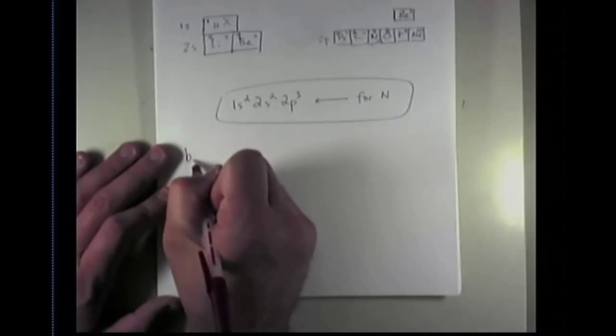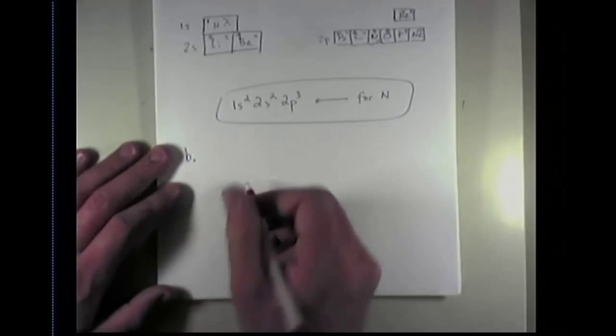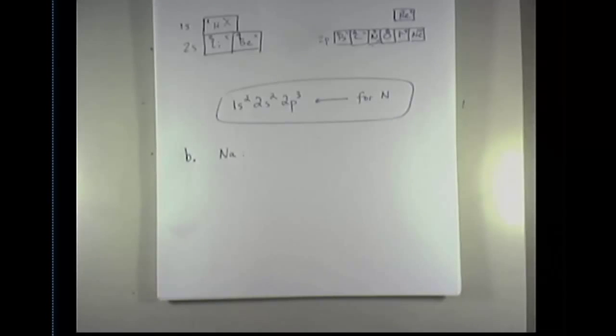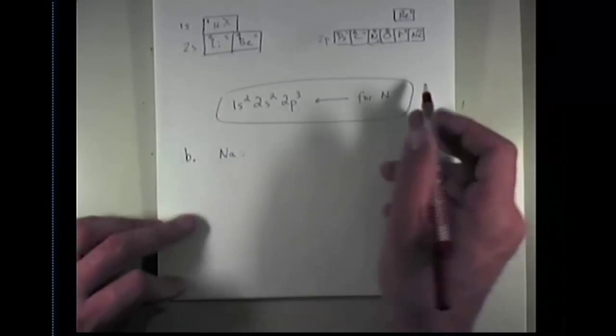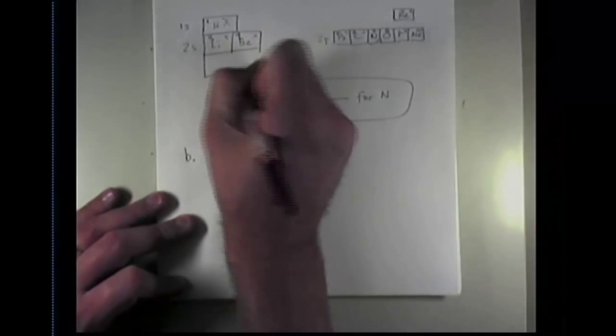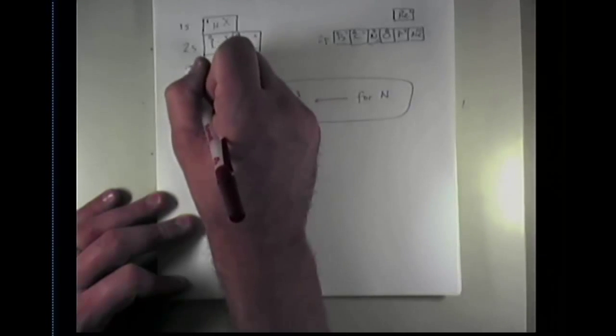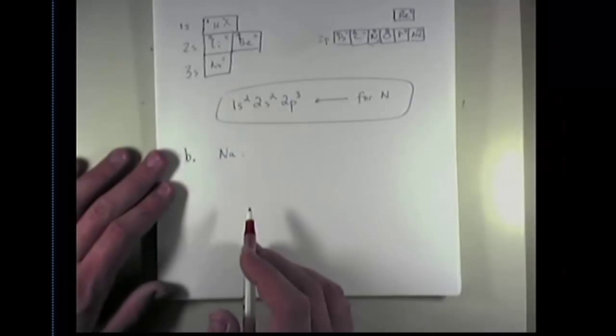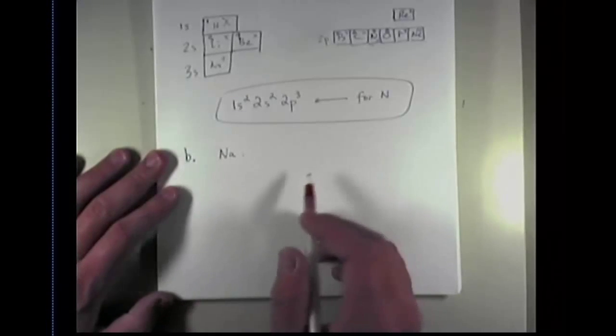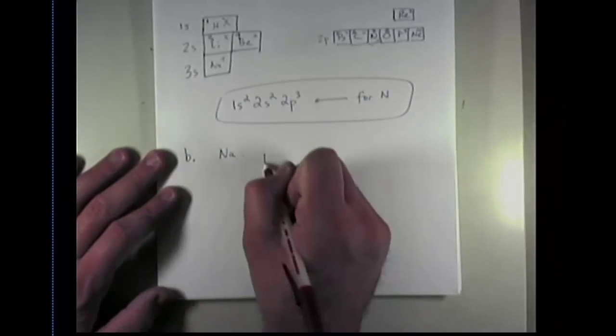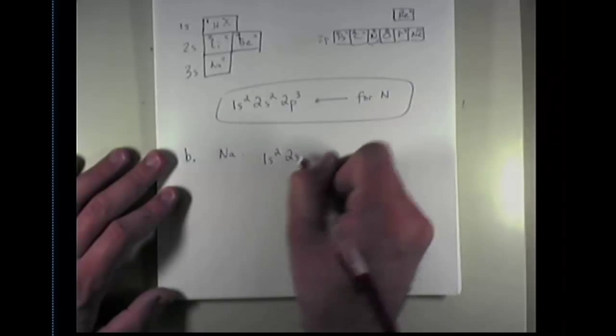Let's now do the electron configuration for sodium. Once again, we have to look at our periodic table and realize that sodium is element number 11. So sodium actually appears on the periodic table right here. Sodium is the first element in the 3s row within the s block.